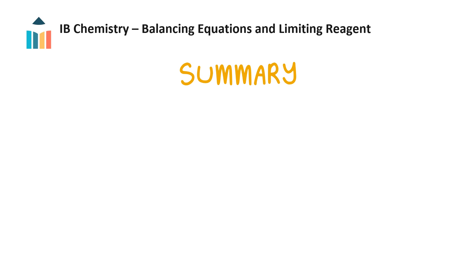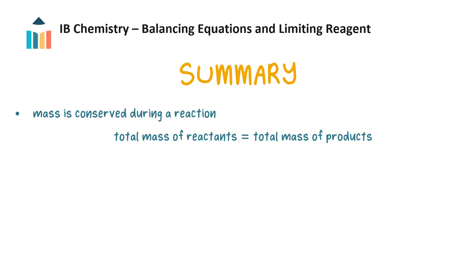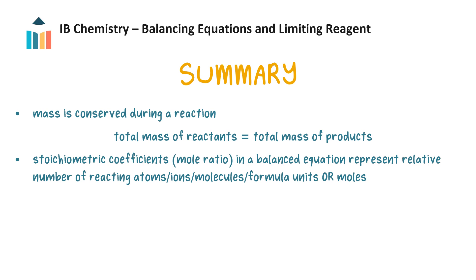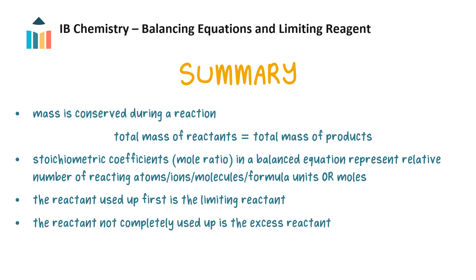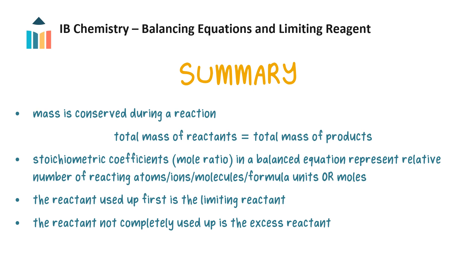Now let's summarize what we have learned. We learned that mass is conserved during a reaction and that the total mass of reactants equals the total mass of products. The stoichiometric coefficients, or mole ratio in a balanced equation, represent the relative number of reacting or produced atoms, ions, molecules or formula units, or their relative number of moles. The reactant used up first is the limiting reactant, and the reactant not completely used up is the excess reactant. The moles of the limiting reactant determines the moles of product which can form.